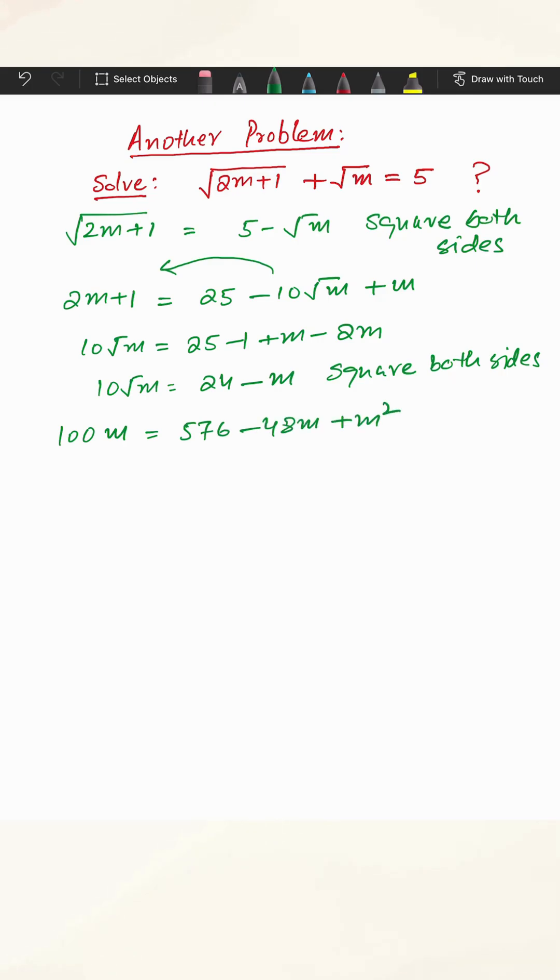So it's a binomial squared. So it's going to be a quadratic: m squared minus 148m plus 576 equals 0. So I'm going to solve this.